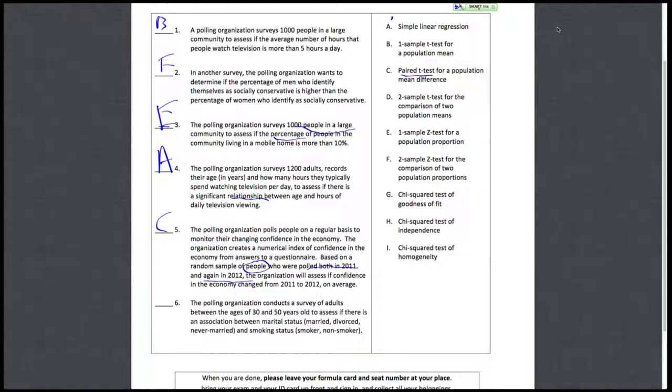Finally, the polling organization conducts a survey of adults between 30 and 50 to assess if there's an association between marital status and smoking status. We want to know if there's an association between two discrete variables, so we know that it's going to be a chi-squared test.